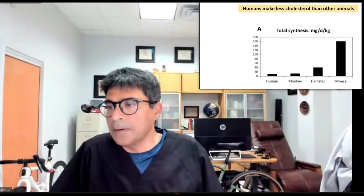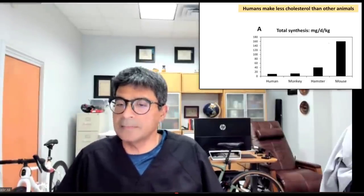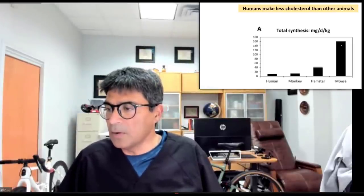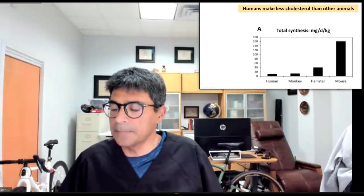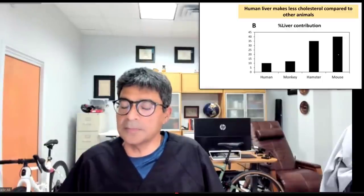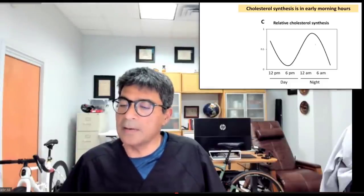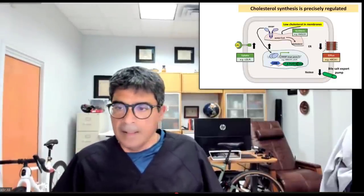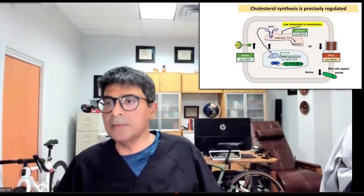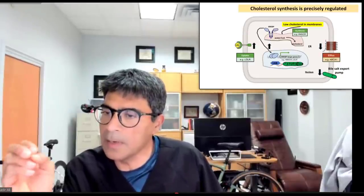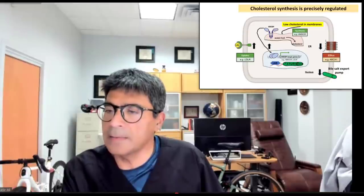Humans on a per-kilogram basis make less cholesterol than other animals — the mouse makes far more cholesterol per kilogram than humans. The liver's contribution to total cholesterol production is much lower in humans than in smaller animals. Cholesterol production peaks in the early morning hours — it goes down in the evening and peaks during the early morning. The key point is that cholesterol synthesis is precisely regulated by many many mechanisms.